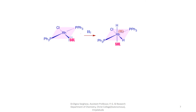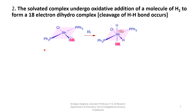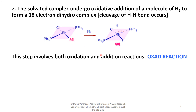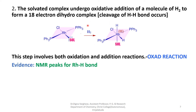Step 2: The solvated complex undergoes oxidative addition reaction with hydrogen molecules, forming an 18-electron dihydro complex. The hydrogen molecule breaks and the hydrogen atoms attach to the rhodium metal ion. This step involves both oxidation and addition reactions, so this reaction is known as oxidative addition. Evidence for such a compound comes from NMR spectroscopy, which provides evidence for the rhodium–hydrogen metal ion bond.